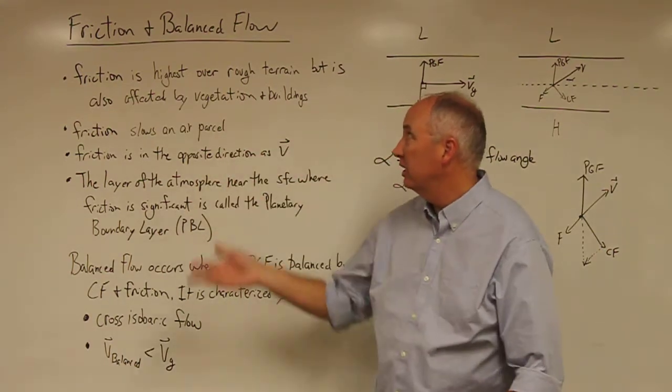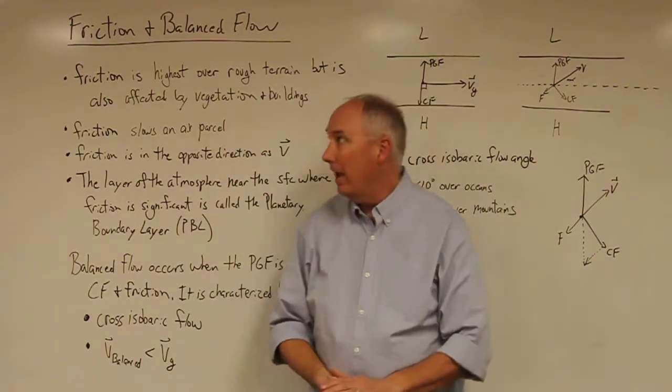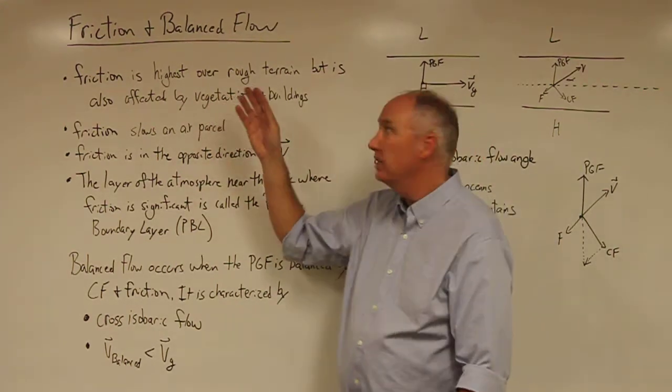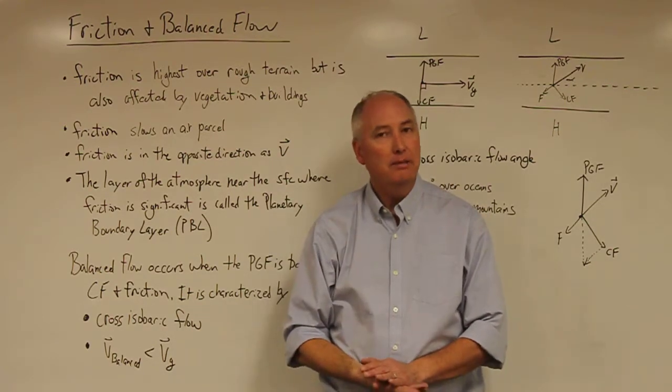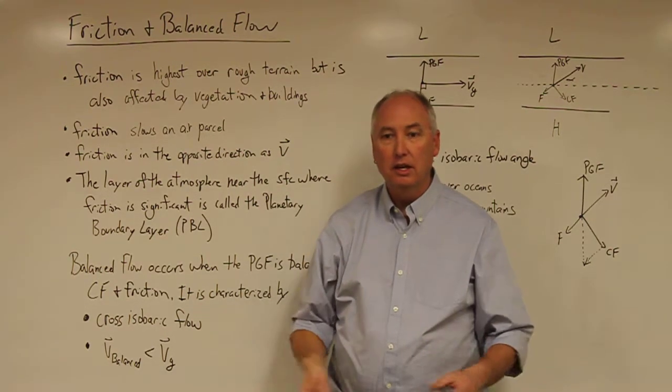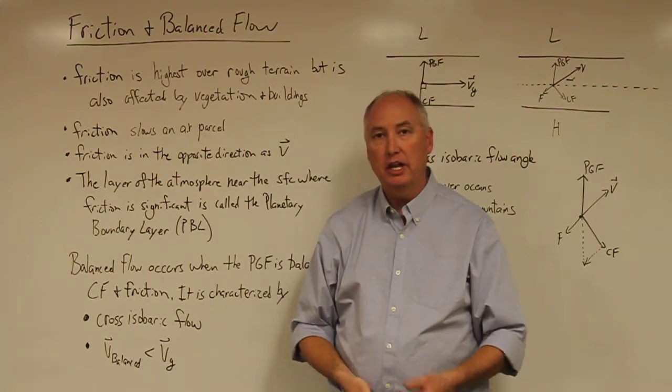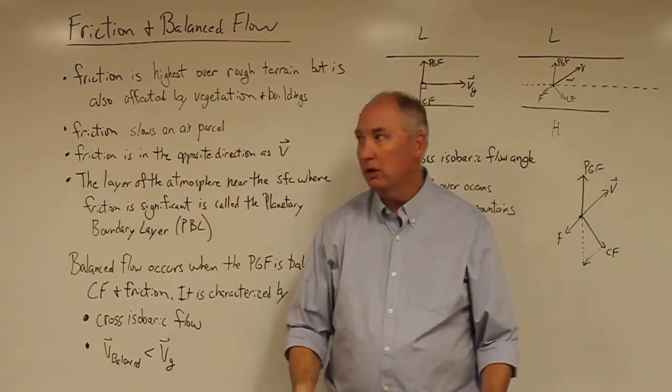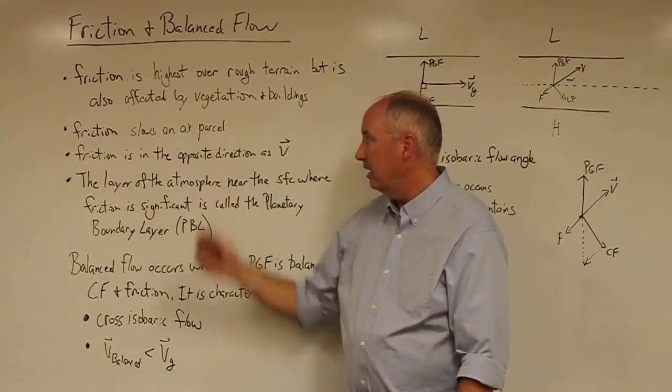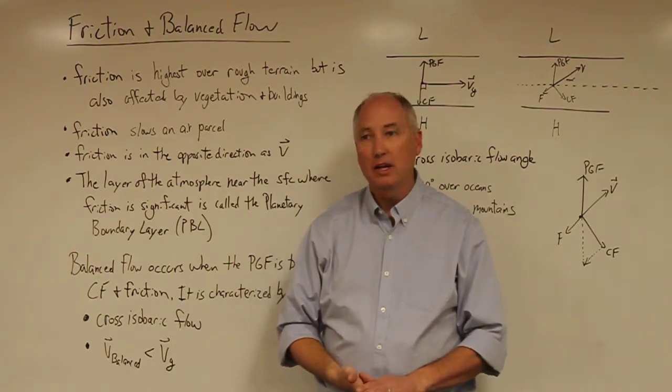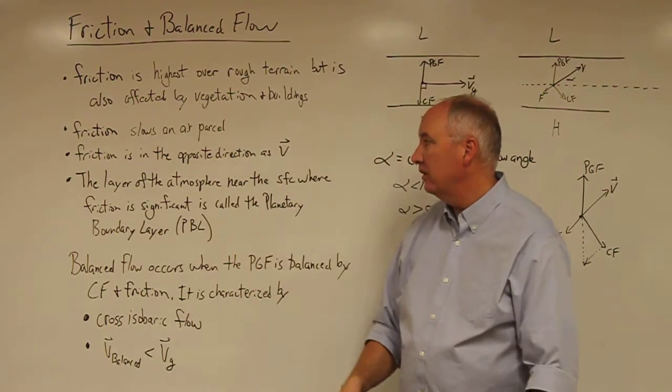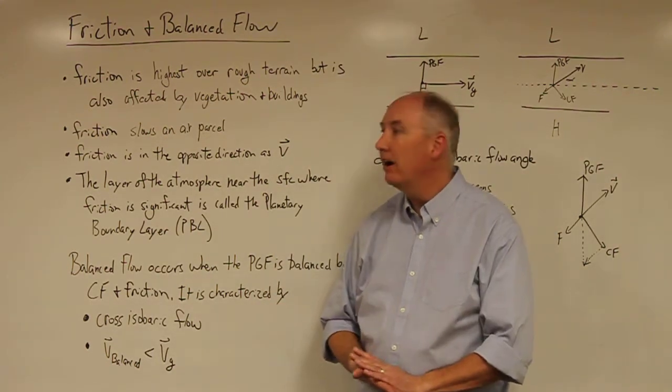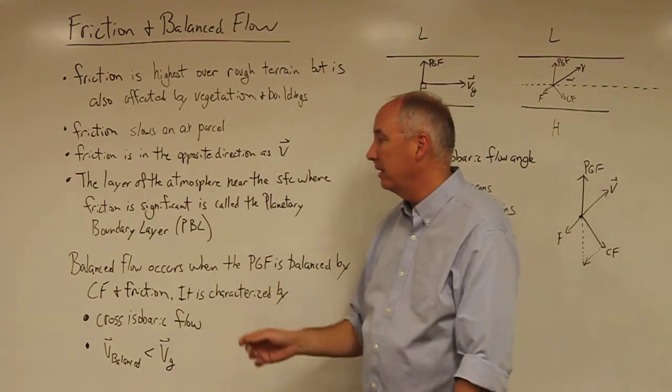Today, we're going to introduce the concept of friction and balanced flow. Friction is highest over rough terrain and is impacted by surface characteristics, including vegetation, buildings, and other obstructions. Friction always acts to slow the air parcel and is directed in the opposite direction of the velocity vector. The layer of the atmosphere near the surface where friction is still significant is defined as the planetary boundary layer or the PBL.